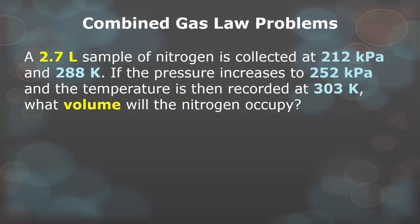Another example: a 2.7 liter sample of nitrogen is collected at 212 kPa and 288 Kelvin. The pressure increases to 252 kPa and the temperature is then recorded at 303 Kelvin. What volume will the nitrogen occupy? Plug these numbers into the formula and solve.